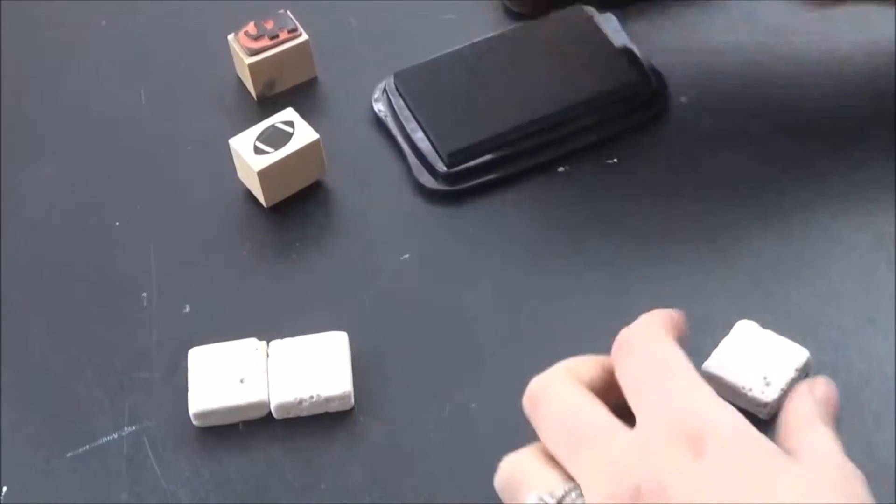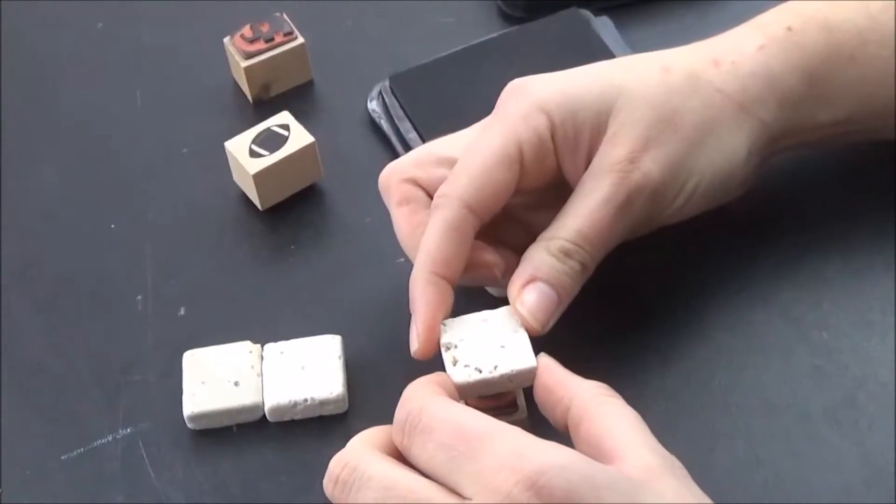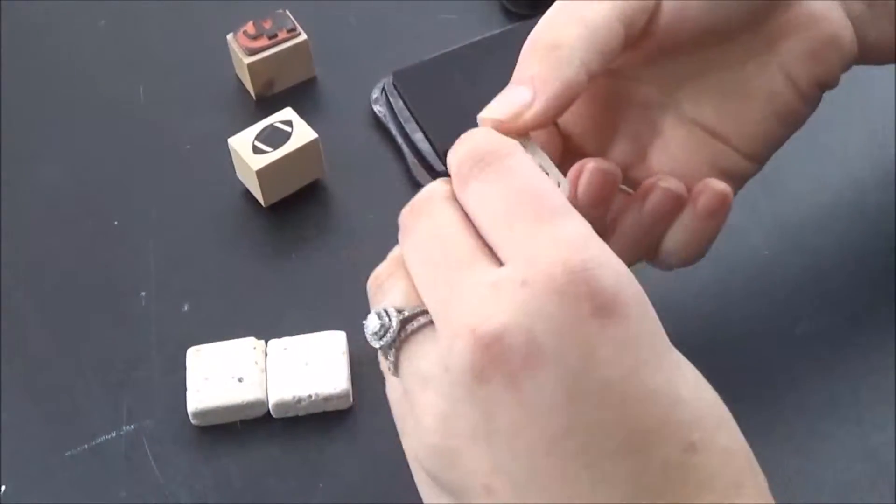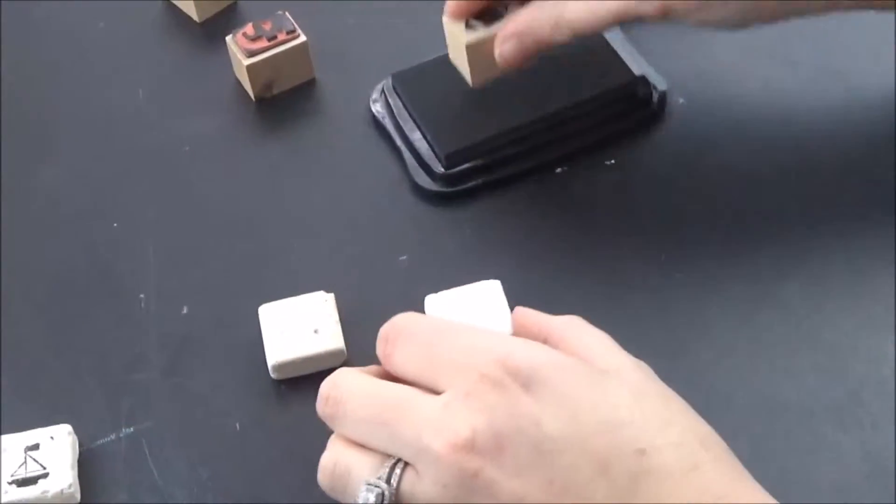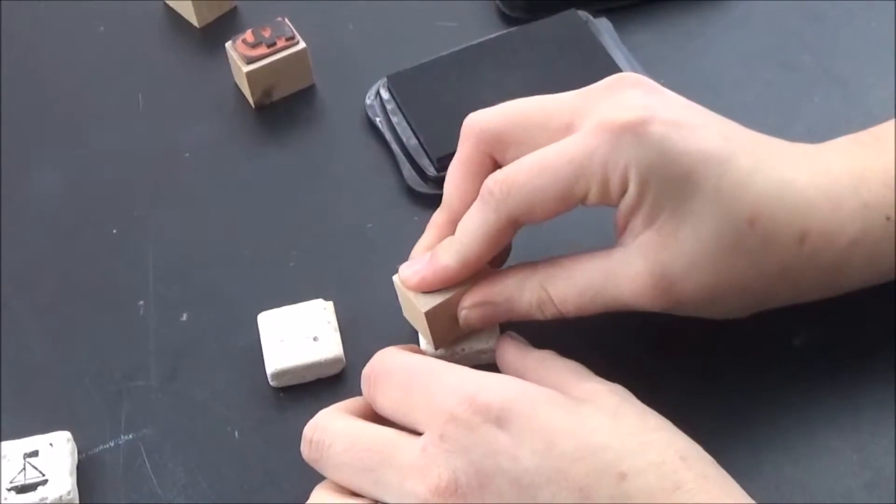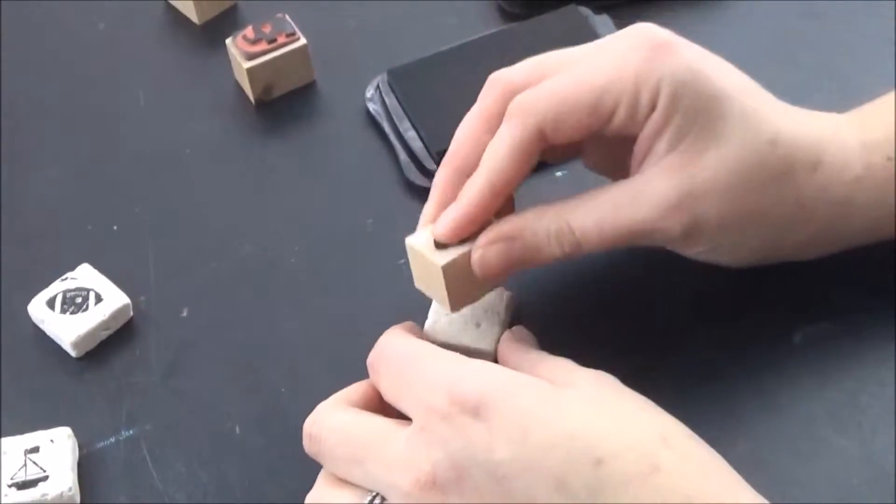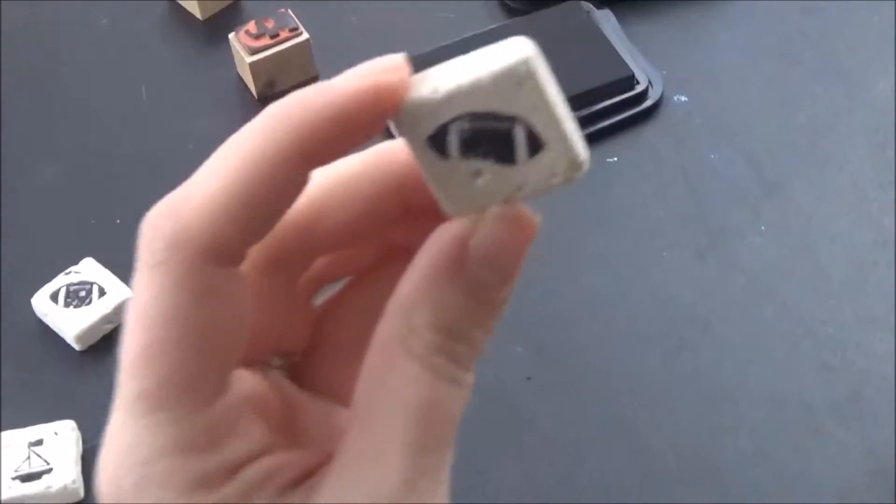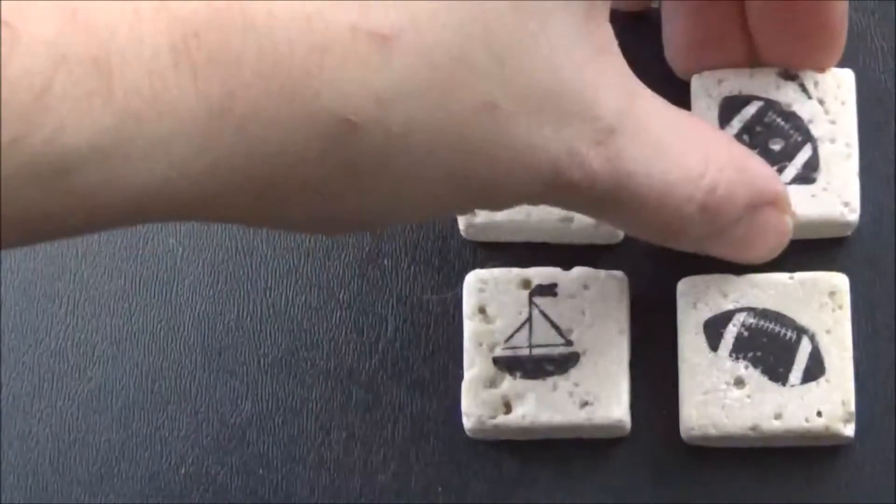This is a super easy project. I usually like to make up a whole bunch at one time so I'm not wasting the oven and the spray. I'm just going to make six for you guys today. For the footballs, I'm actually going to press the stamp to the tile instead of doing it the other way, because it doesn't matter where the football ends up on your tile.